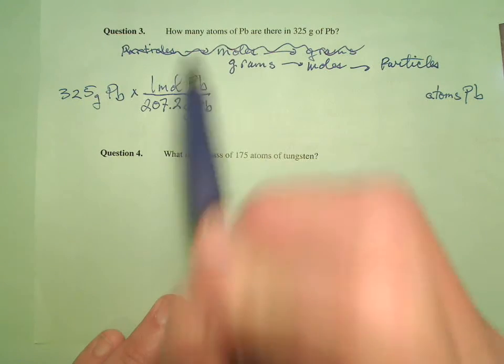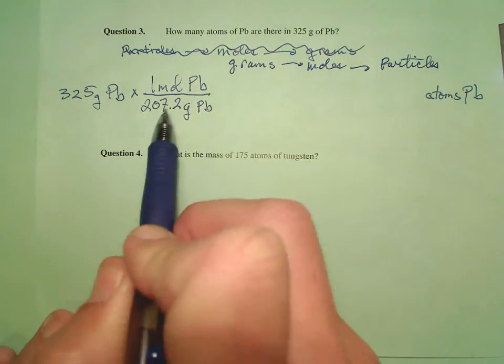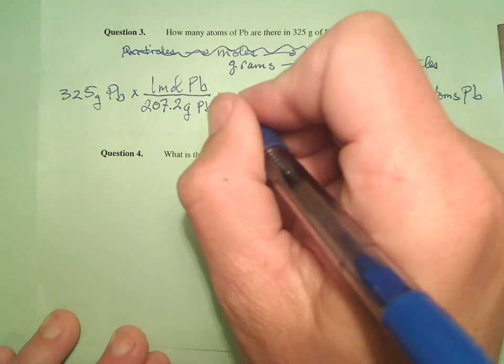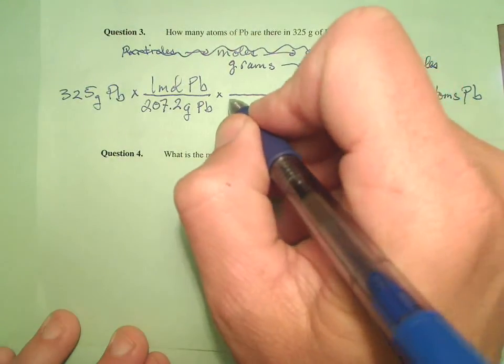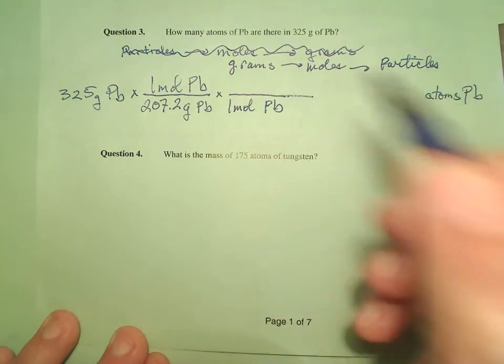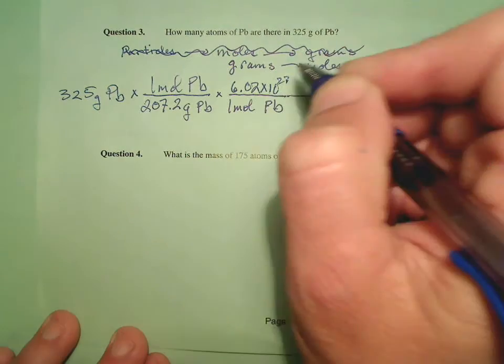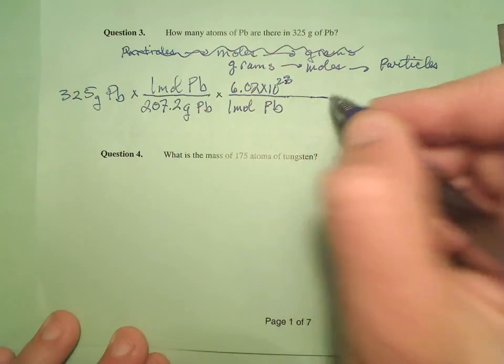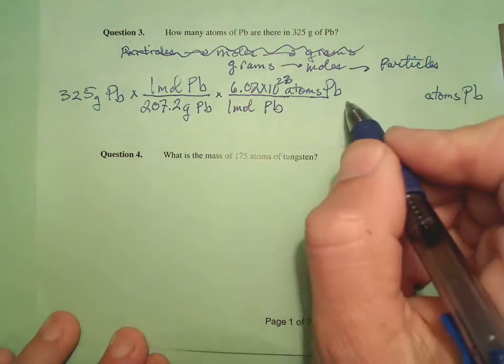It just says how many atoms, and atoms are particles. So it's grams to moles to particles. So I've got it into moles, and now I can go moles to particles. What's my mole-particle relationship? Our buddy Avogadro. I know that one mole of lead is 6.02 times 10 to the 23rd. Remember, the particles are atoms since we're talking about an element, and atoms of lead. Bingo.